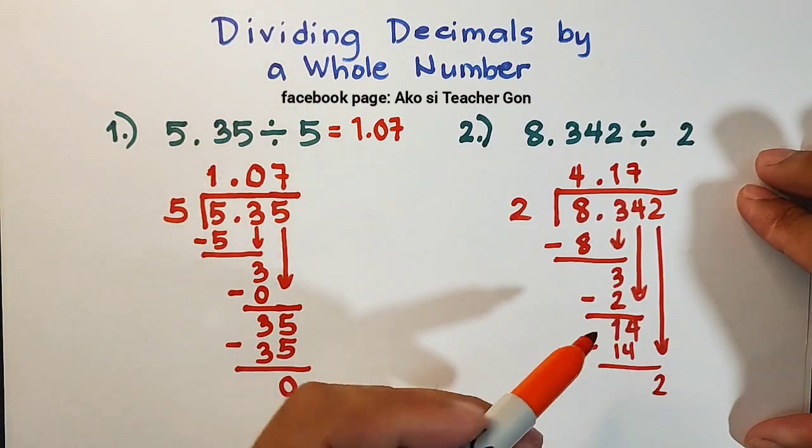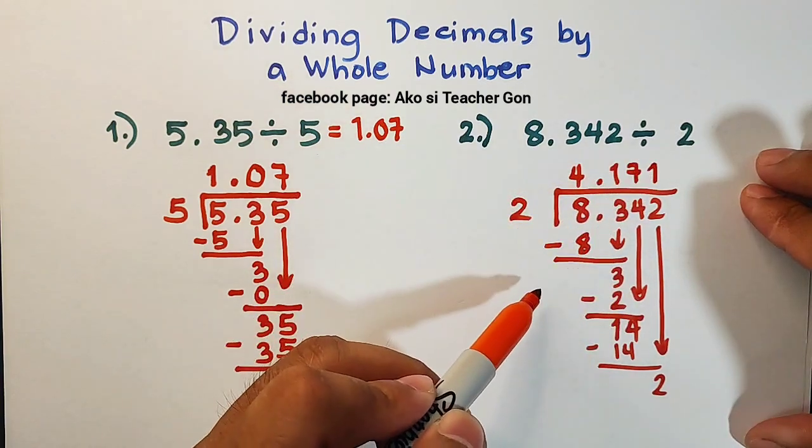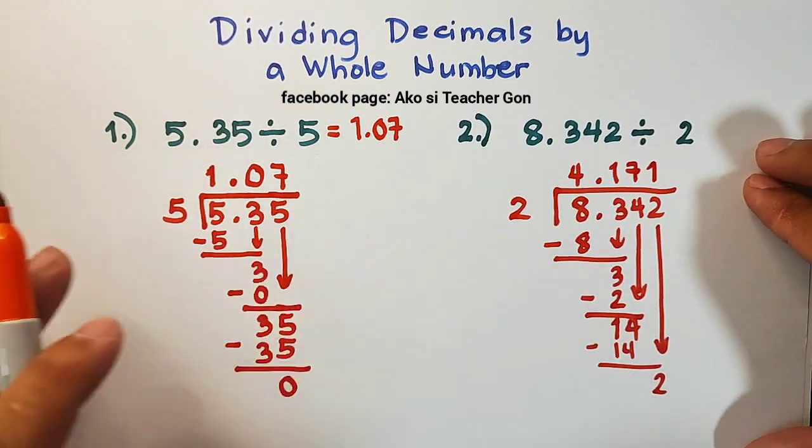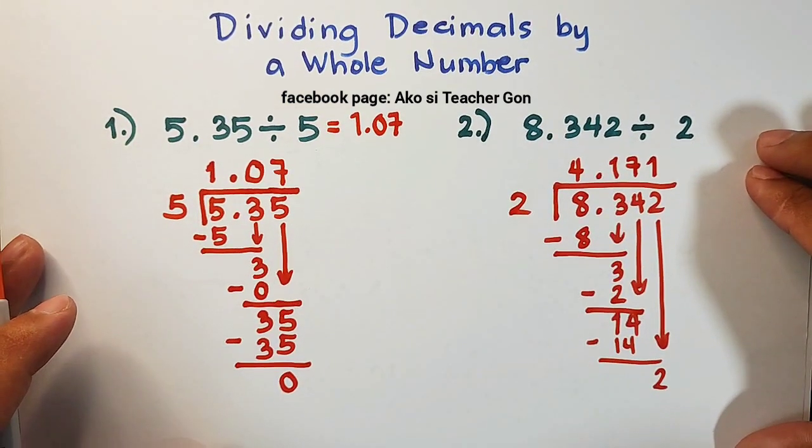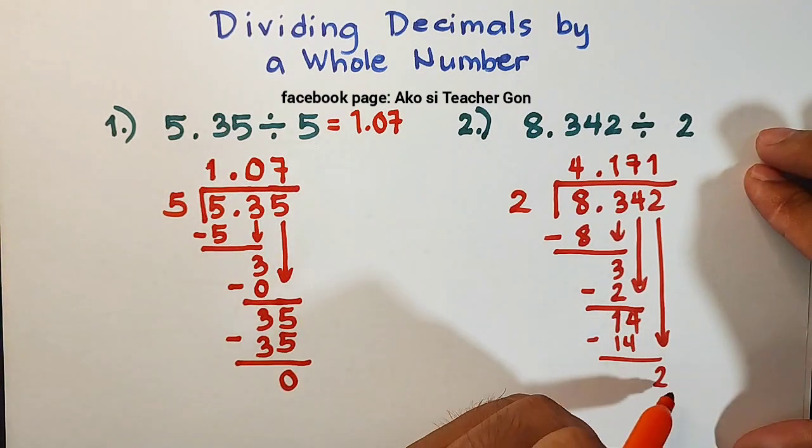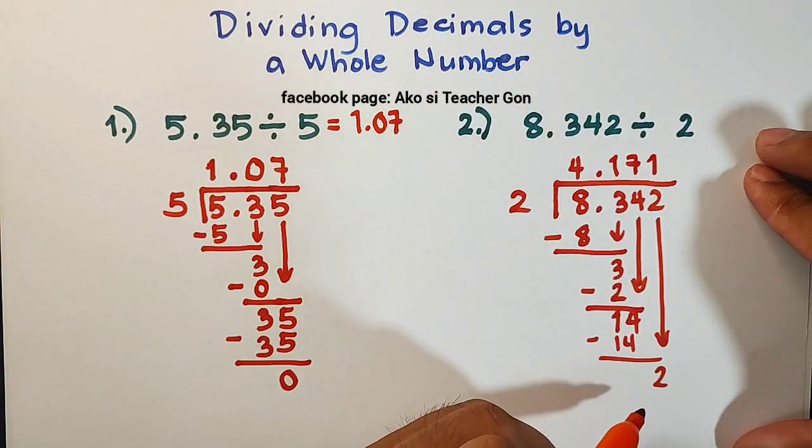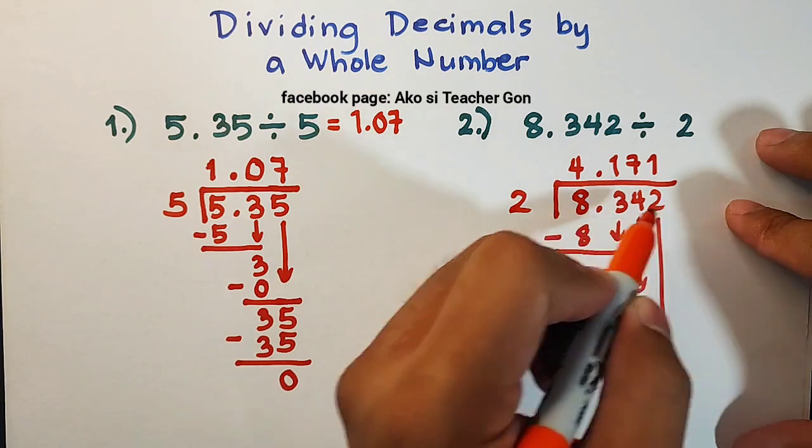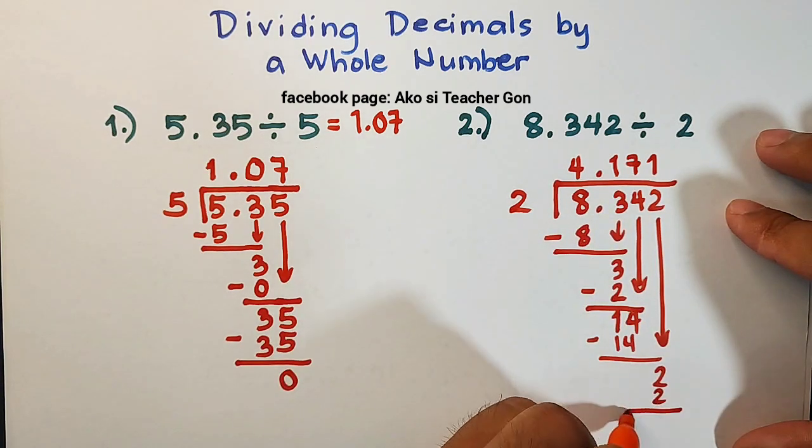So 2 divided by 2 is equal to 1. So we don't have enough space here. So I'm gonna move this paper. So 2 divided by 2 is 1. So we are done with that. So 1 times 2 is 2. And subtract these numbers.